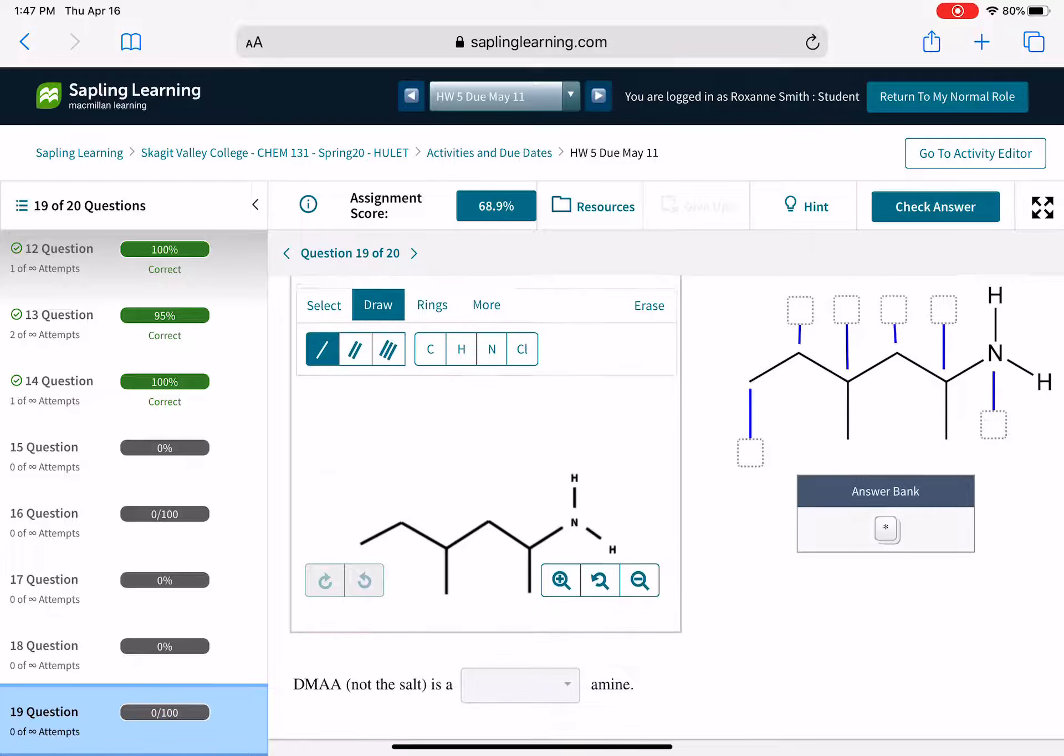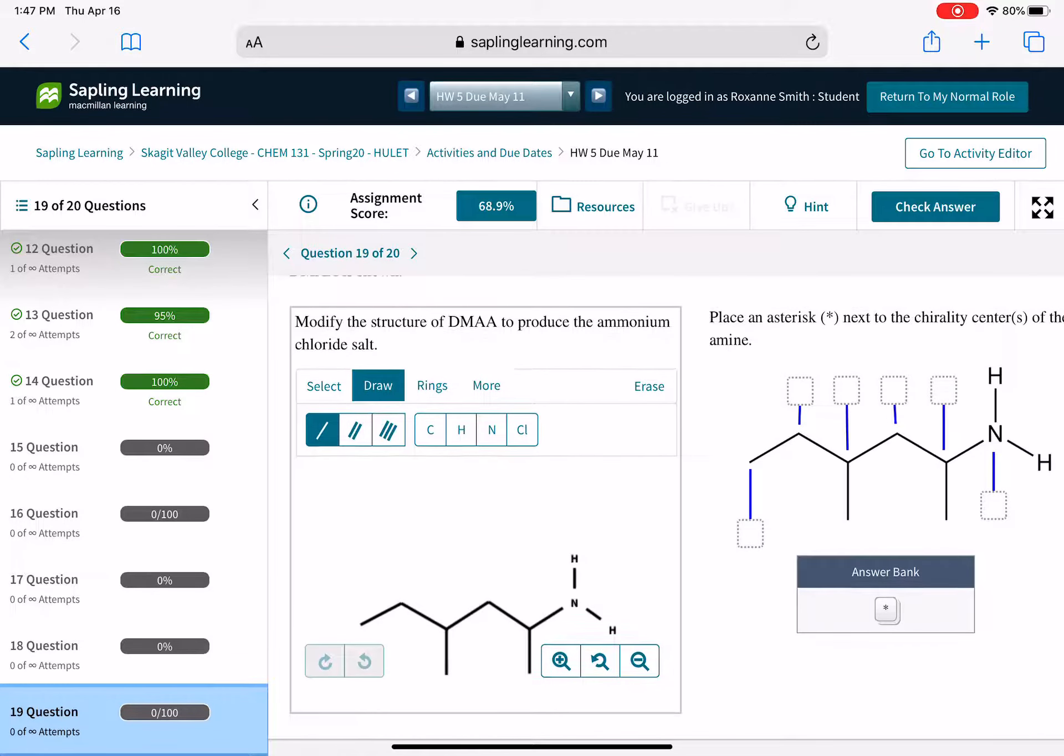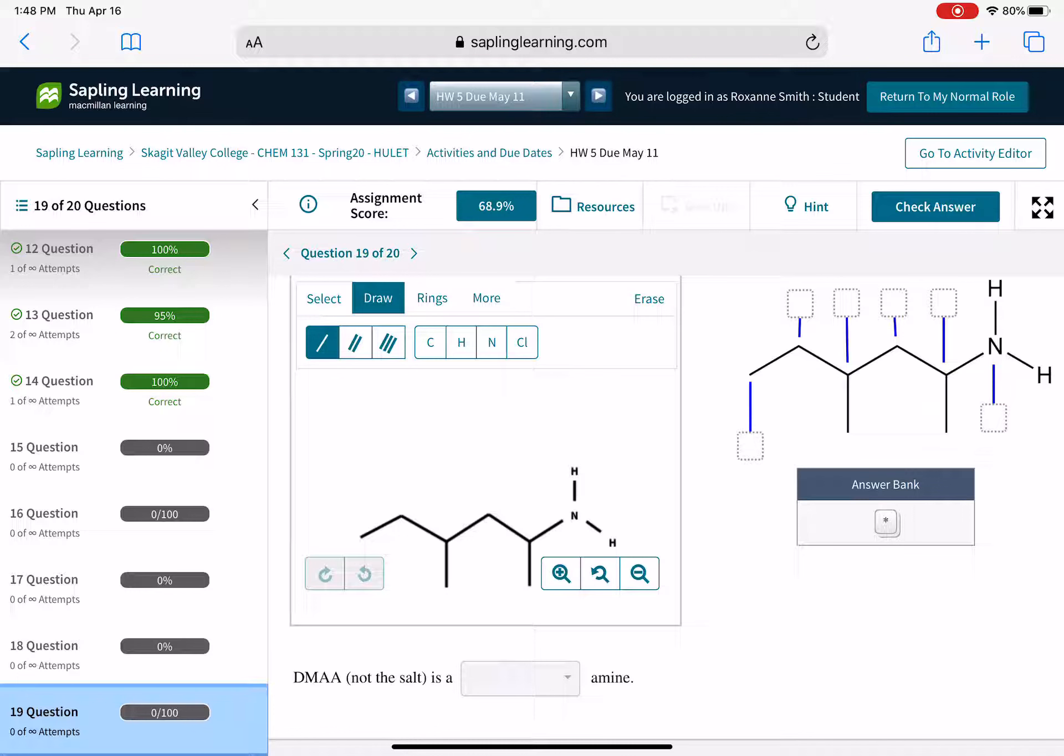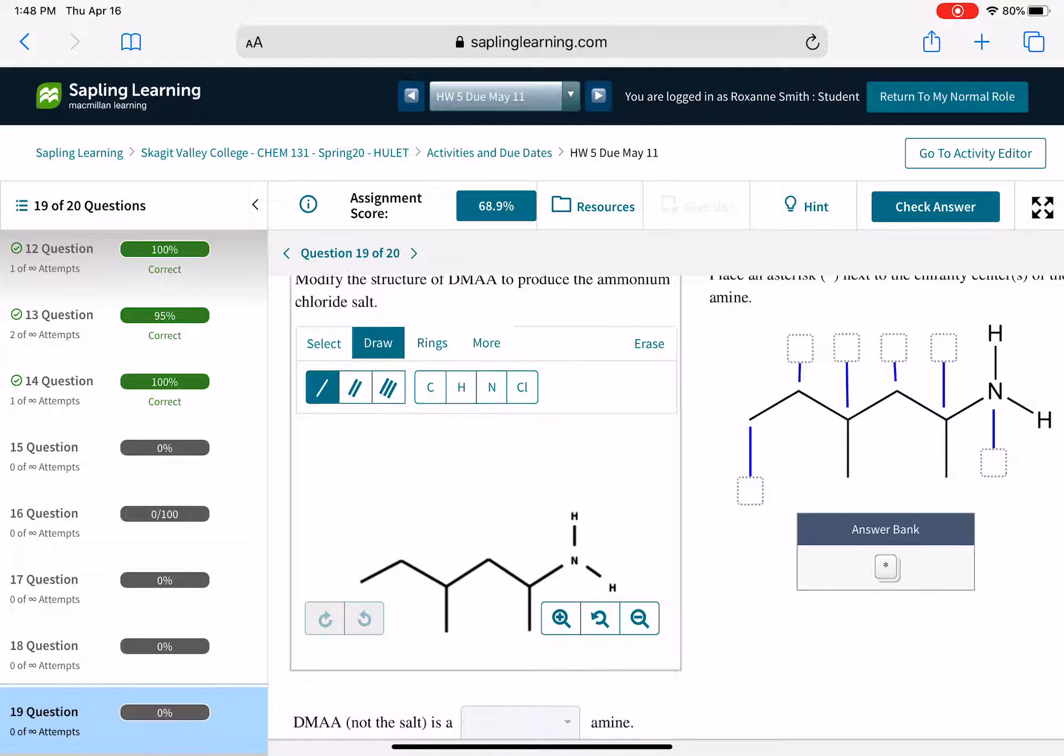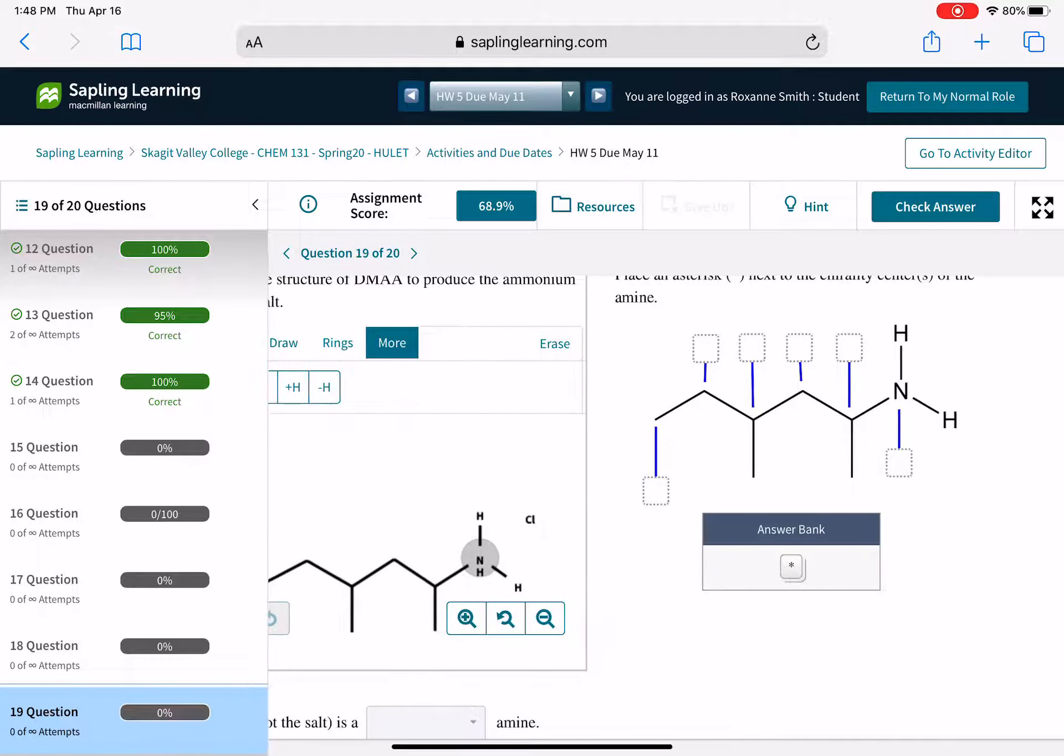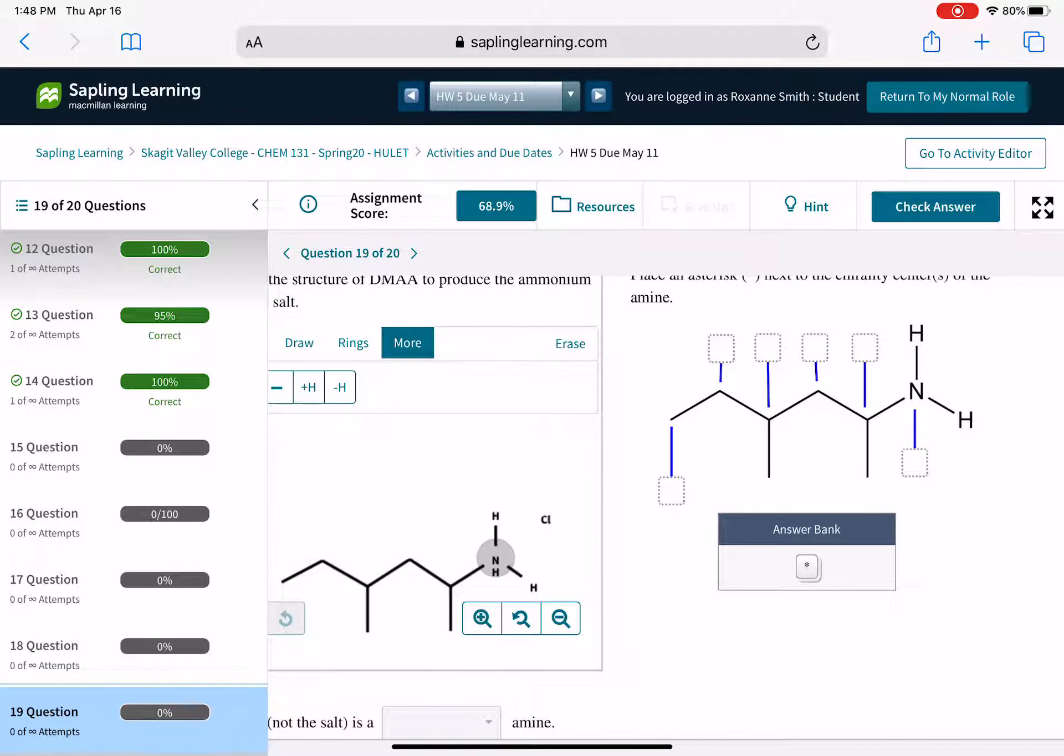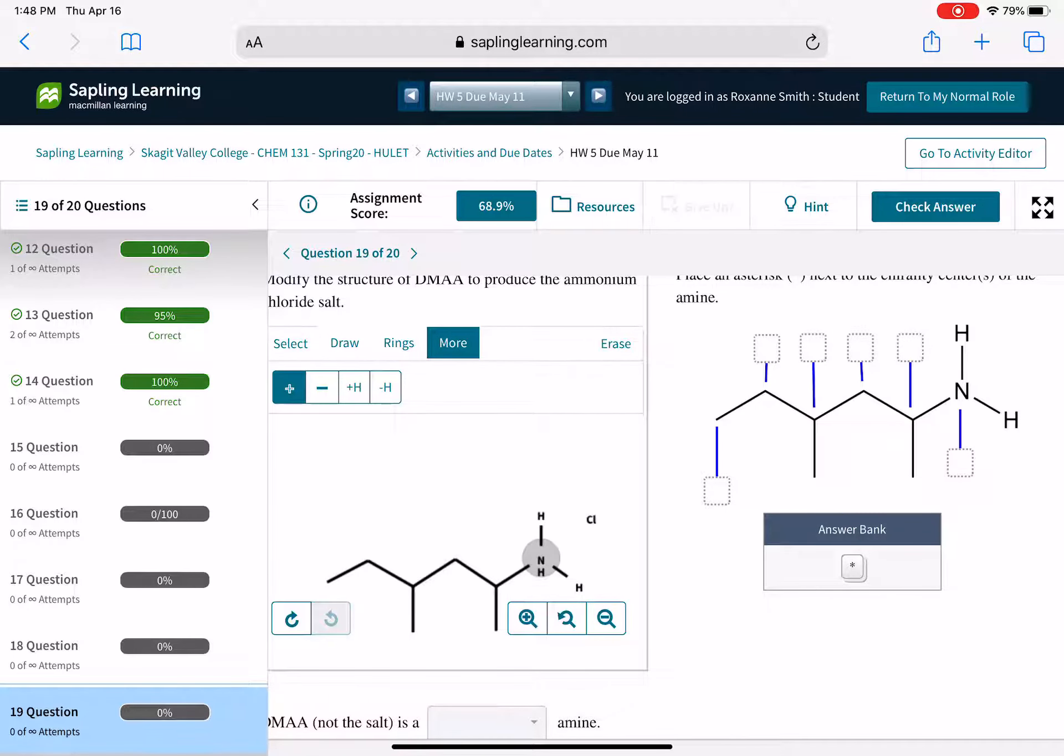Question number 13 is almost exactly the same. So here again, it's giving us an amine. It wants us to classify this amine. It wants us to convert this amine into an ammonium chloride. So you're going to have a chlorine counter ion. You've got to convert that nitrogen. You've got to put some charges on there. And then over here on this side, you've got to decide which one of these things are chiral carbons. It better not be the nitrogen because nitrogen is not a chiral carbon. So hopefully that helps you get through these last few problems.